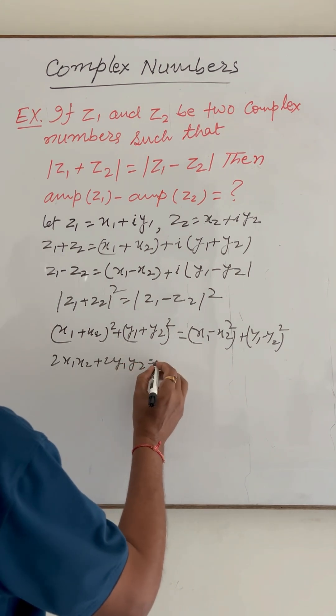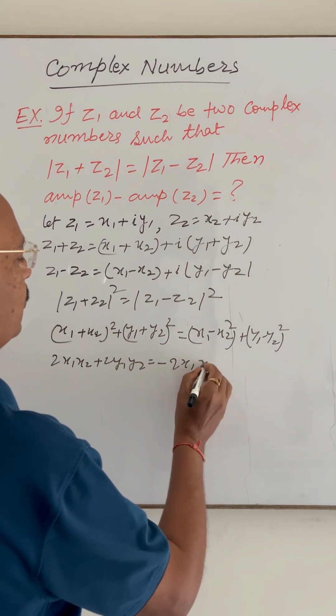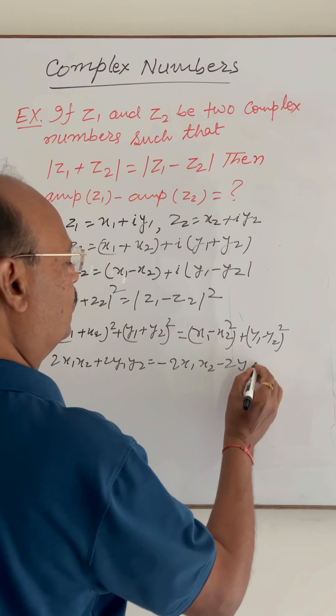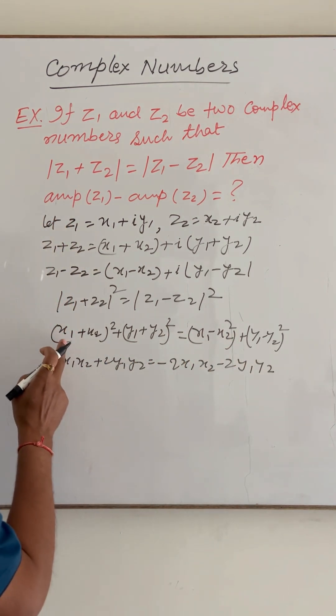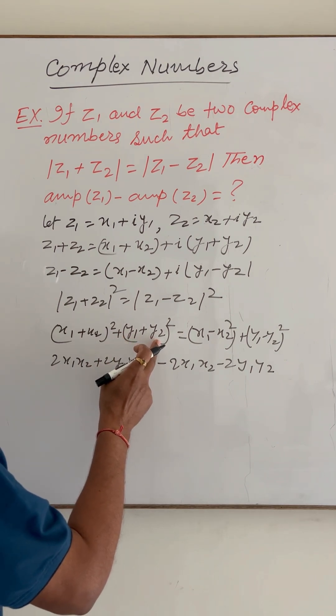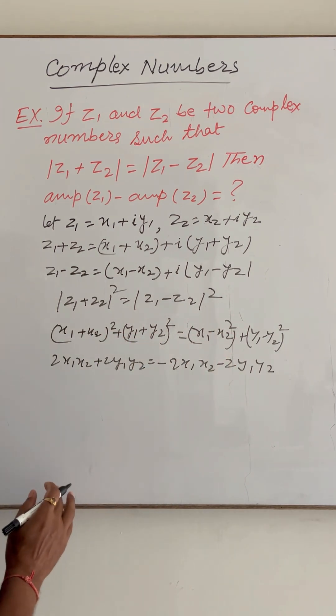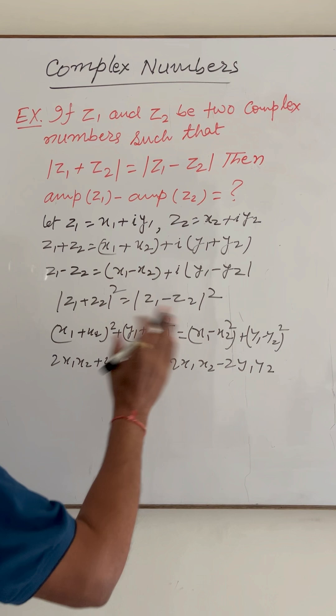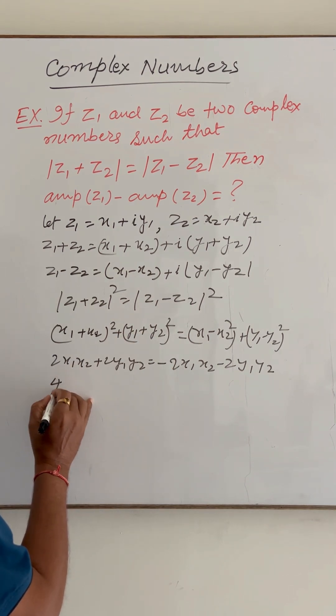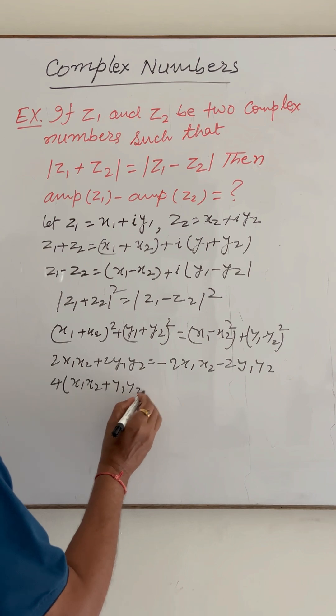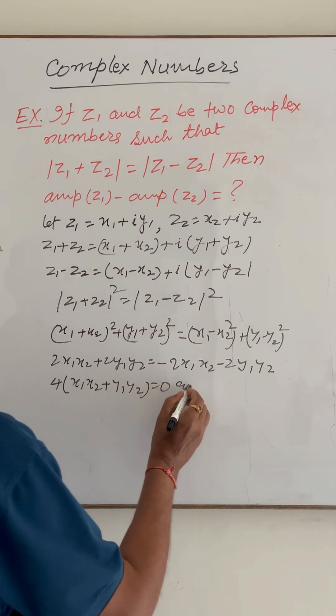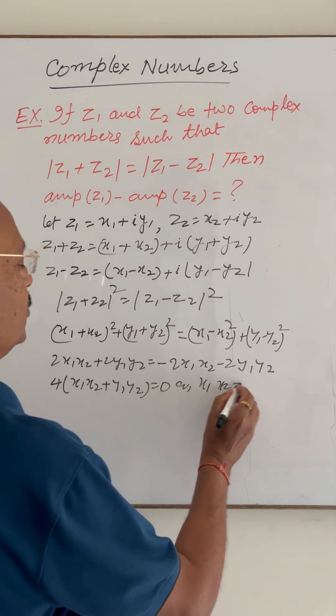On the right hand side, minus 2*x1*x2 minus 2*y1*y2. Many terms will cancel out: x1 square, x2 square, y1 square, y2 square cancel from both sides. Transposing right hand side to left hand side, we get 4 times (x1*x2 + y1*y2) equals 0, or x1*x2 + y1*y2 equals 0.